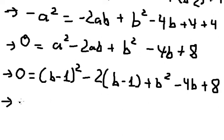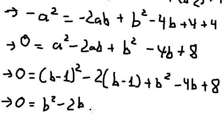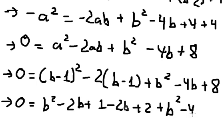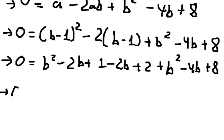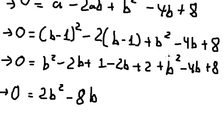Now we need to expand. We have b squared and b squared, giving us 2b squared. Then negative 2b and negative 4b give us negative 8b. And for the constants: 8, 2, and 1 give us 11.